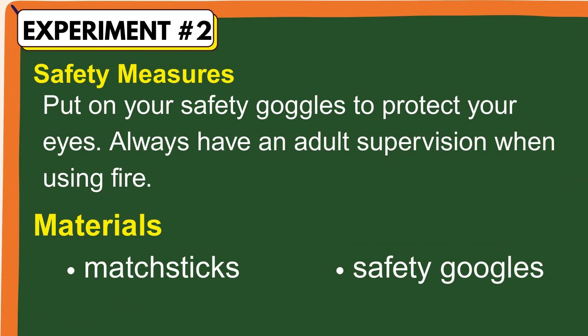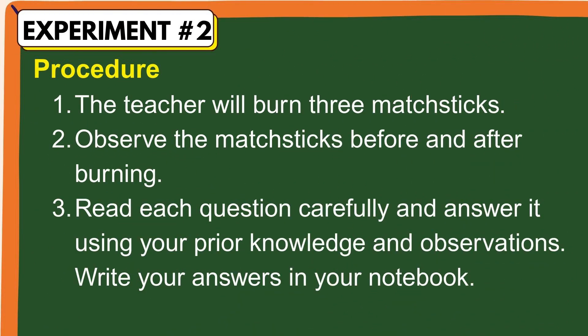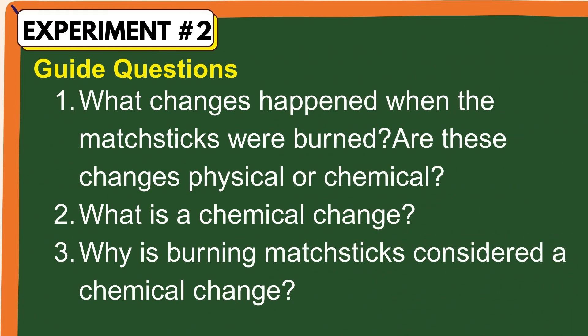Let's begin with experiment number 2. But first, let's review our safety precautions: put on your safety goggles to protect your eyes, and always have adult supervision when using fire. These are the materials we'll need. The teacher will burn three matchsticks. Observe the matchsticks before and after burning. Read each question carefully and answer it using your prior knowledge and observations. Write your answers in your notebook.